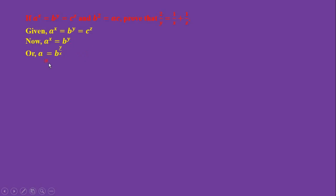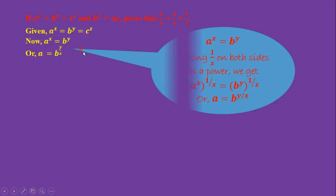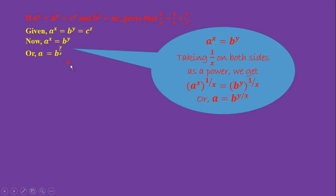From A^x = B^y, we get A = B^(y/x). I am taking the power 1/x on both sides — power in power.